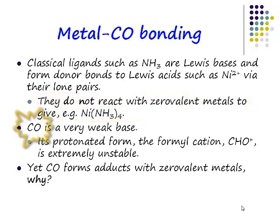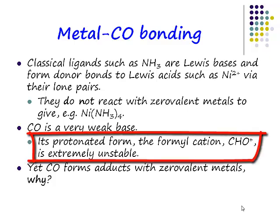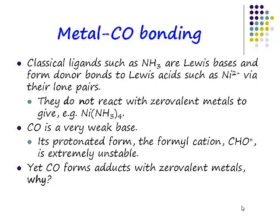So what is it about carbon monoxide that is special? Is it that carbon monoxide is a super base — so basic that it can bind to metal species that don't even know they're electron deficient? No. Carbon monoxide is not a spectacularly strong base. In fact, whereas you can readily protonate ammonia to make an ammonium cation, you need a very strong acid to protonate carbon monoxide to make the formyl cation, and that species is not very stable at all.